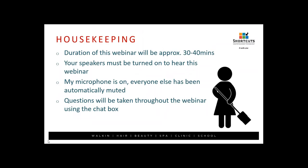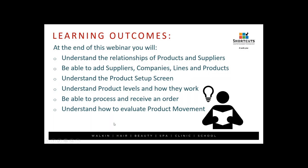The learning outcomes for today: at the end of this webinar you will be able to understand the relationships of products and suppliers, add in suppliers, companies, lines, and products, understand the product setup screen, understand product levels and how they work, process and receive an order, understand how to evaluate product movement, and understand the stock controls as well.